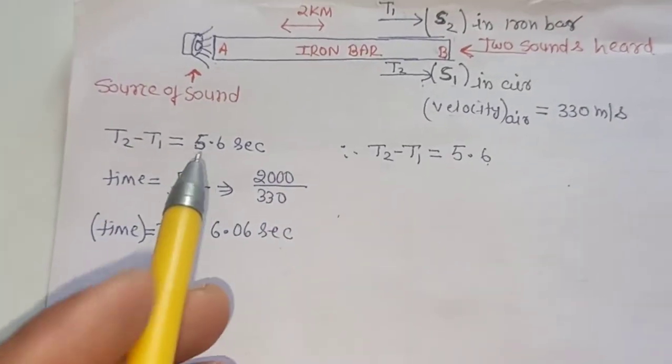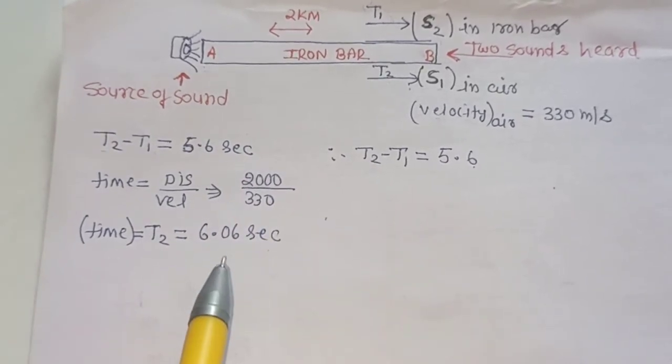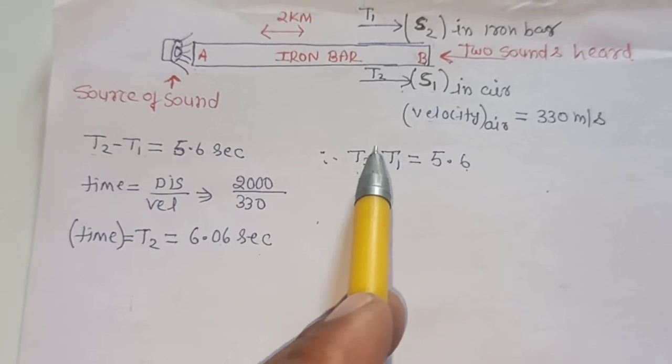T2 minus T1, interval already given is 5.6. We find the value of T2, 6.06 second. We have to find the time interval T1.